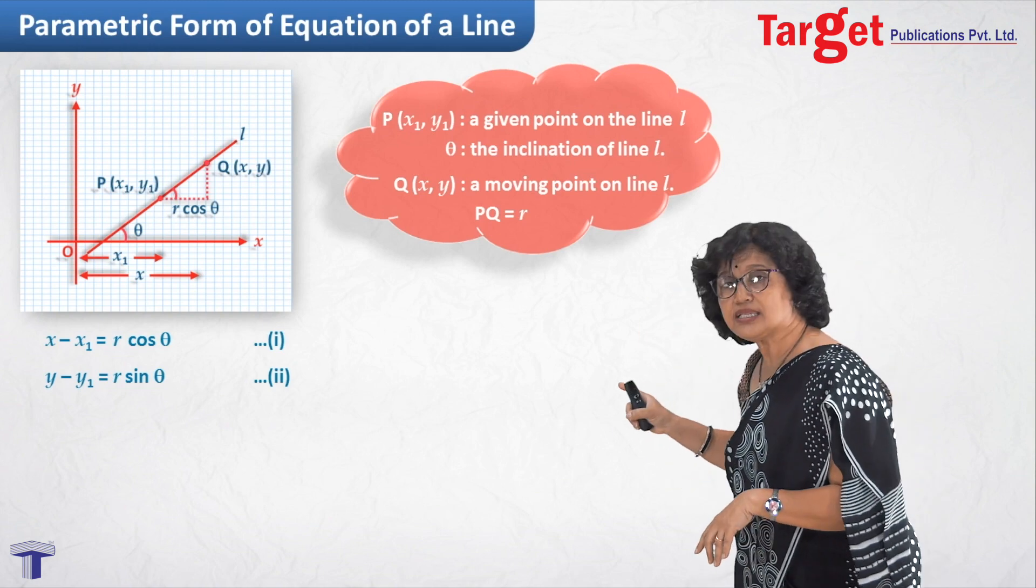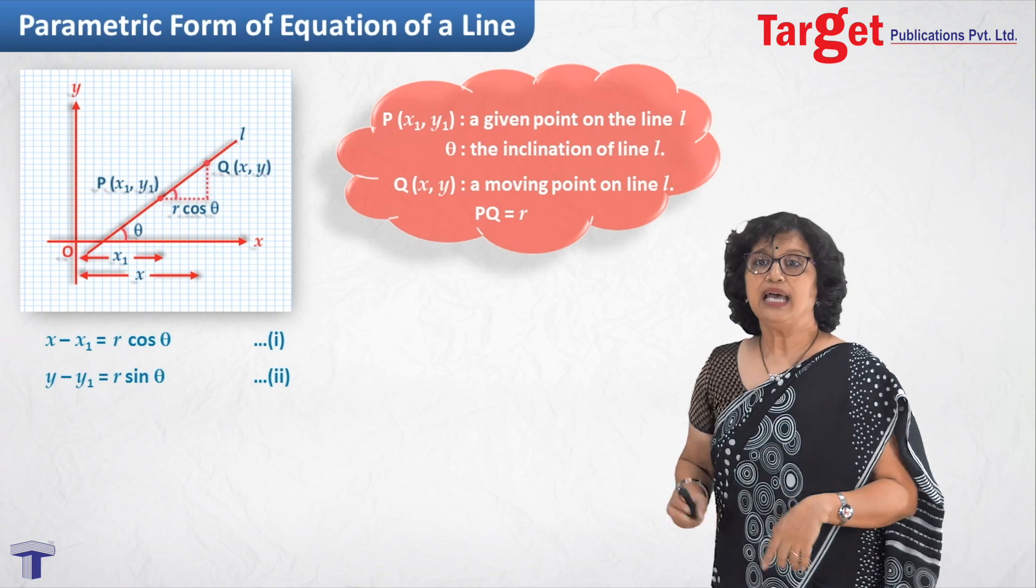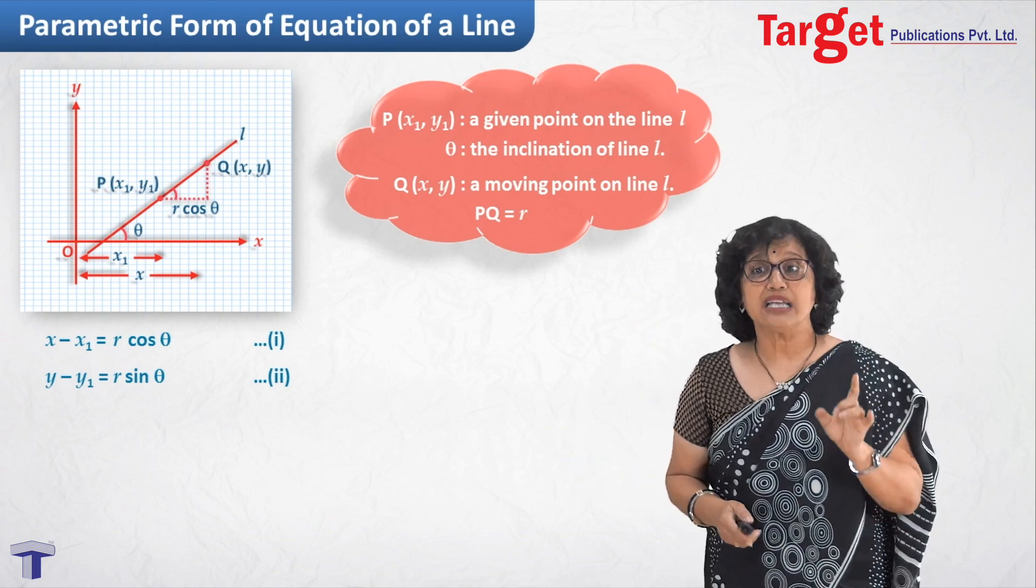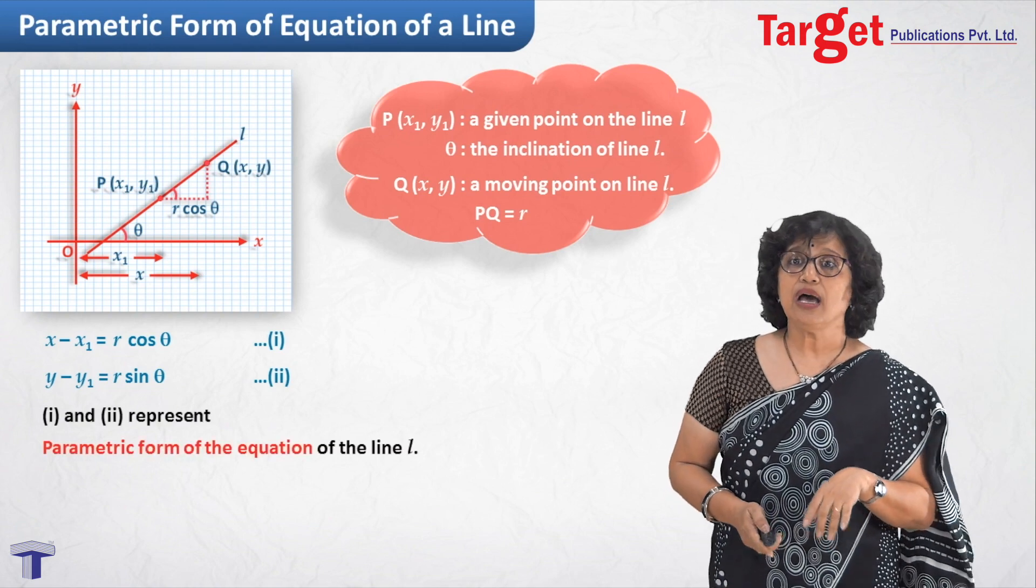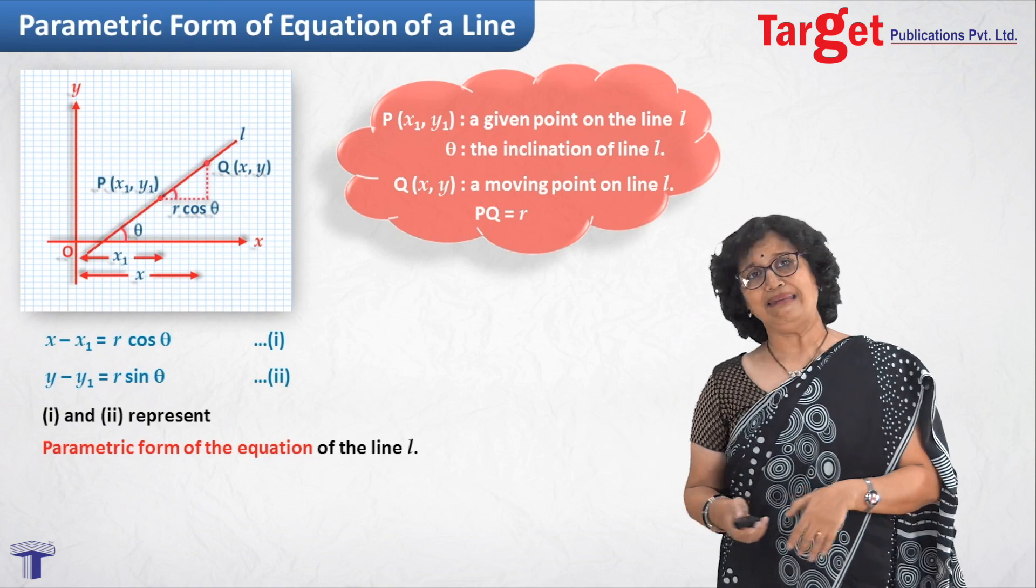So what we are doing is, we are writing x minus x1 equal to r cos theta, we introduce that r, that parameter. And y minus y1 equal to r sine theta, again r is the parameter. And that is why equations 1 and 2 together are actually called parametric form of equation of line.